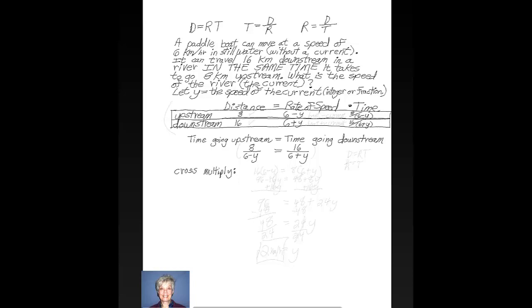A paddle boat can move at a speed of 6 km per hour in still water, that is, without the current. It can travel 16 km downstream in a river in the same time it takes to go 8 km upstream. What is the speed of the river? That is, what is the speed of the current?